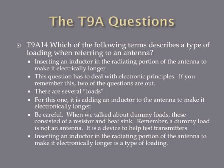Which of the following terms describes a type of loading when referring to an antenna? The answer is inserting an inductor in the radiating portion of the antenna to make it electrically longer. This question deals with electronic principles — there are several types of loads, and for this one it's adding an inductor to the antenna to make it electrically longer. A dummy load, by contrast, consists of a resistor and a heat sink and is not a real antenna.